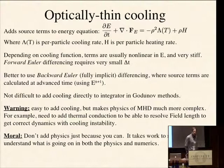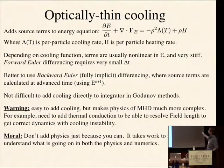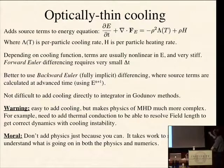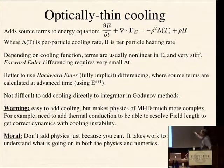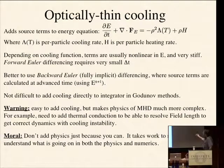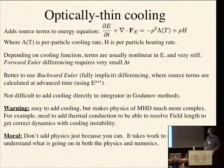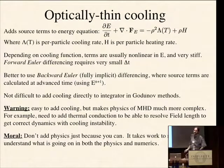One of the simplest examples is optically thin cooling. To the energy equation you add source terms on the right-hand side: a cooling term and a heating term. Lambda(T) is the per-particle cooling rate — there should be an n² lambda(T) with a divide by the mean mass per particle squared — and h is the per-particle heating rate. Depending on the cooling function adopted, lambda is generally a very nonlinear and stiff function of the temperature, so the source term can be very large compared to the flux gradient term — you're integrating a stiff nonlinear ODE requiring a very small time step for stability with forward Euler.